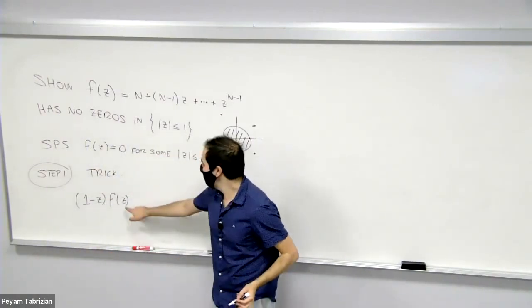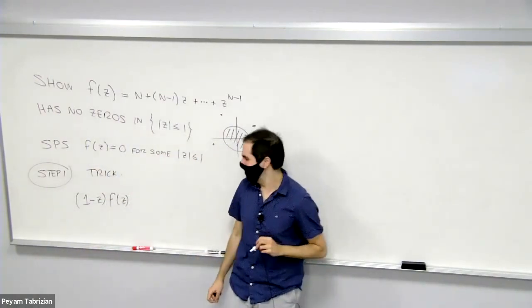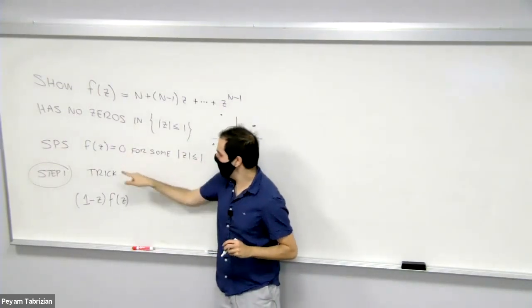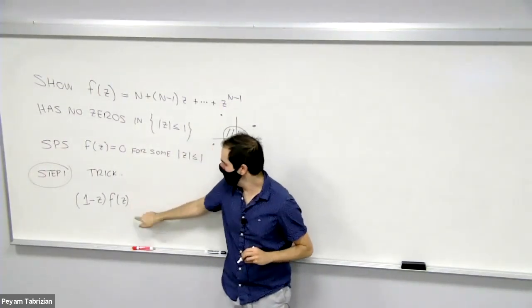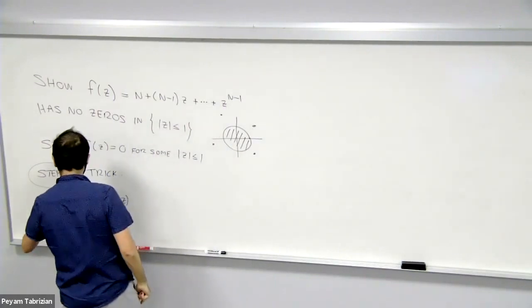Soon we will see why this is true. Now, on the one hand, f(z) = 0, so this is 0, so this whole expression becomes 0.